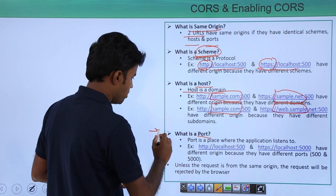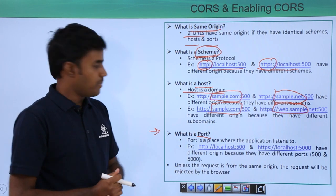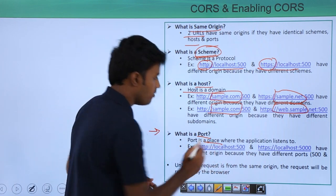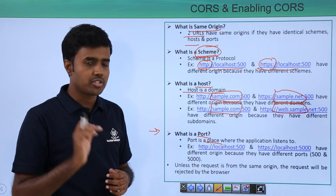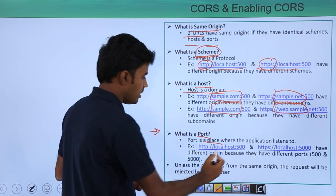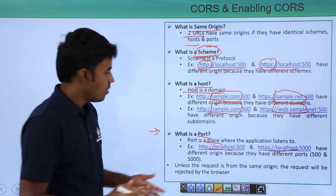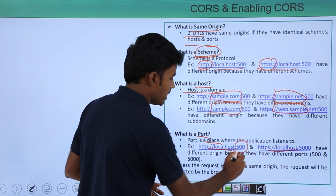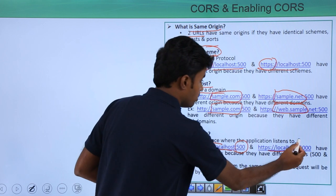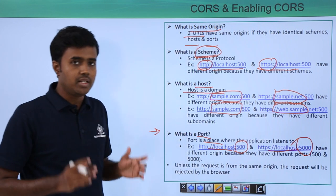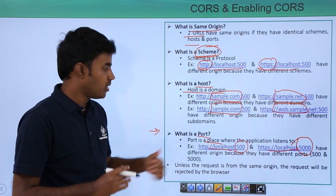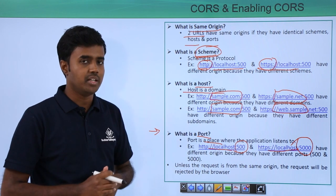And the third one is a port. What is a port? A port is a place where the application listens to. For example, you may run two different applications on your computer. One may be listening at port 500 and the other one may be listening at port 5000, but they still do have different origin because they are listening in different ports.